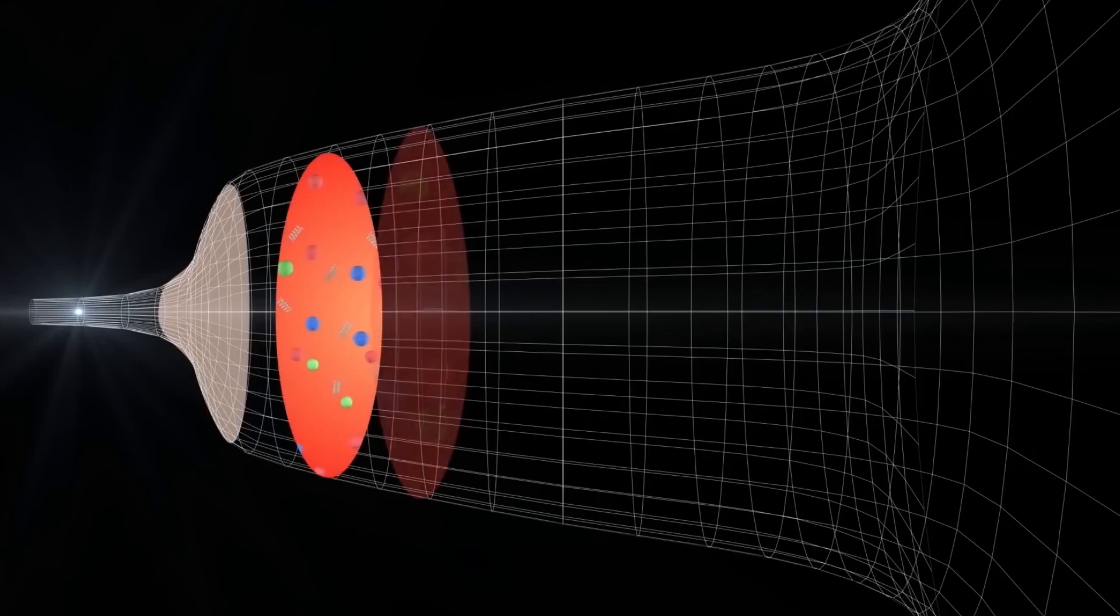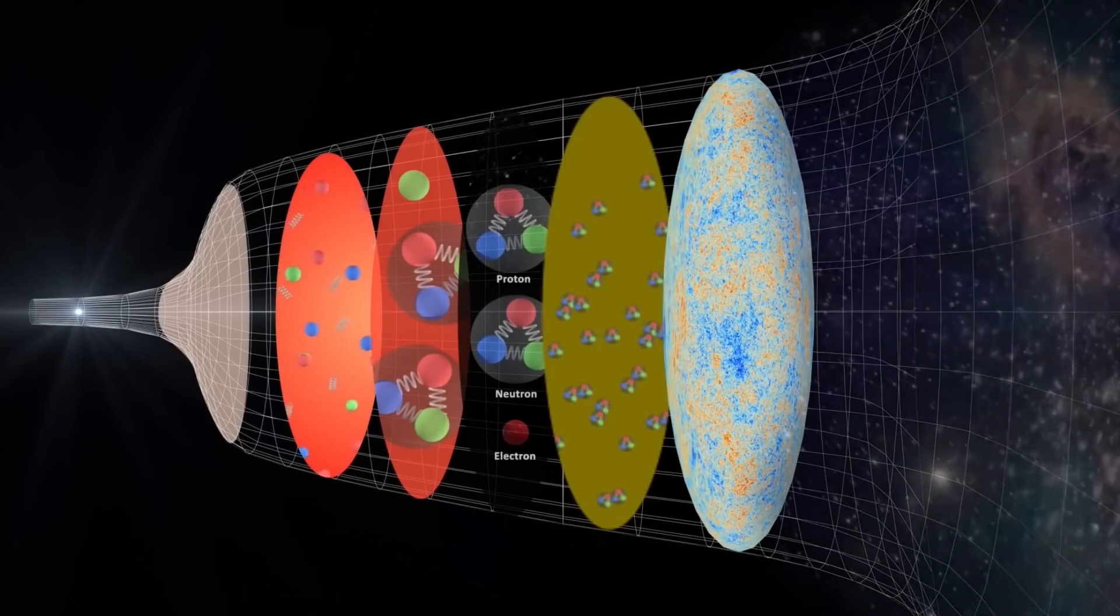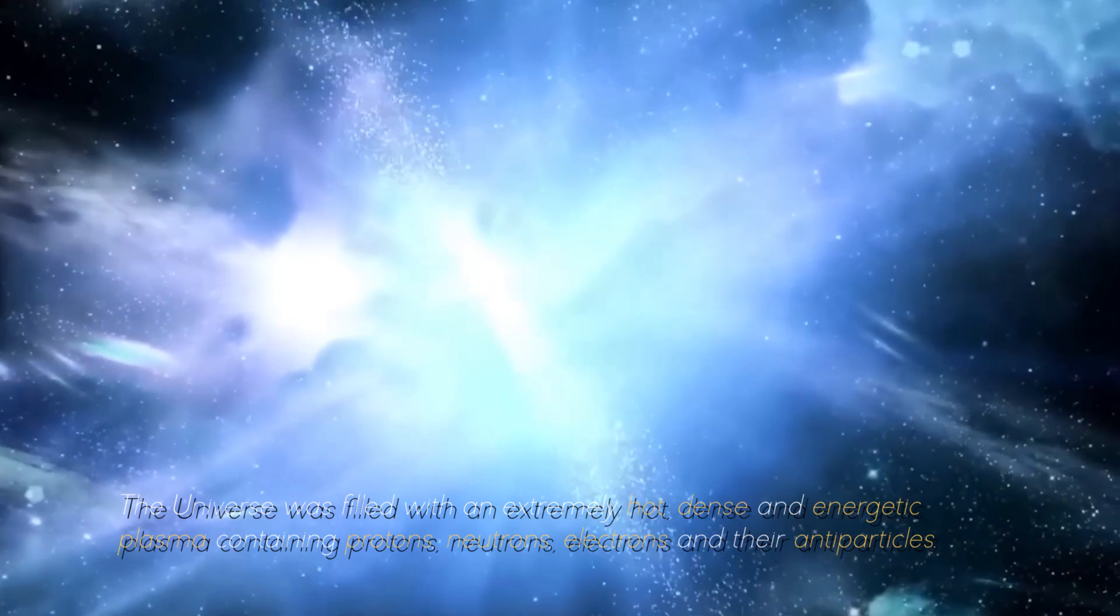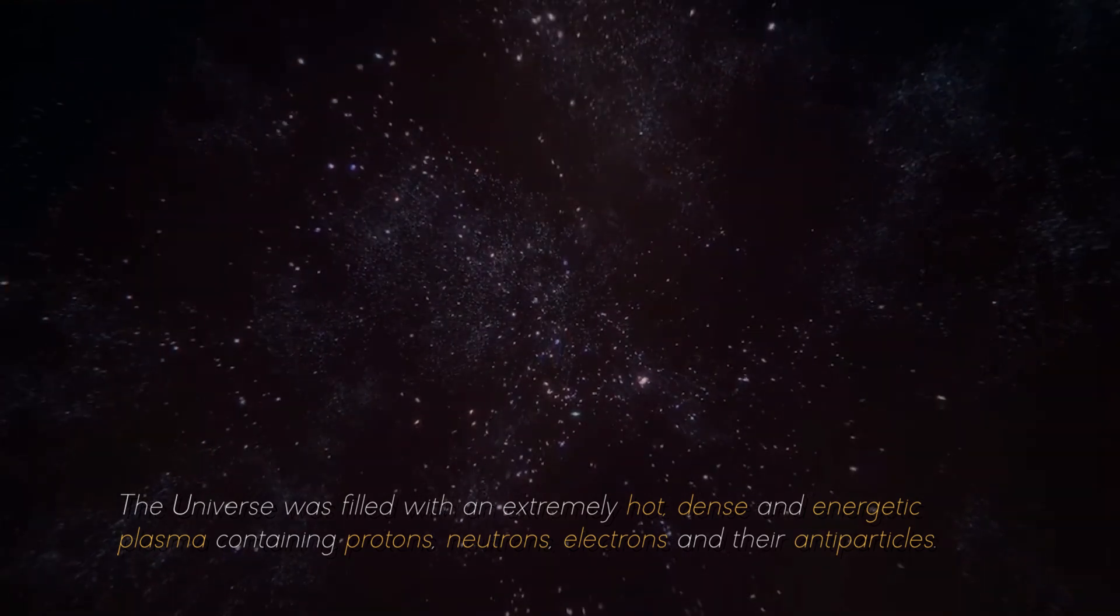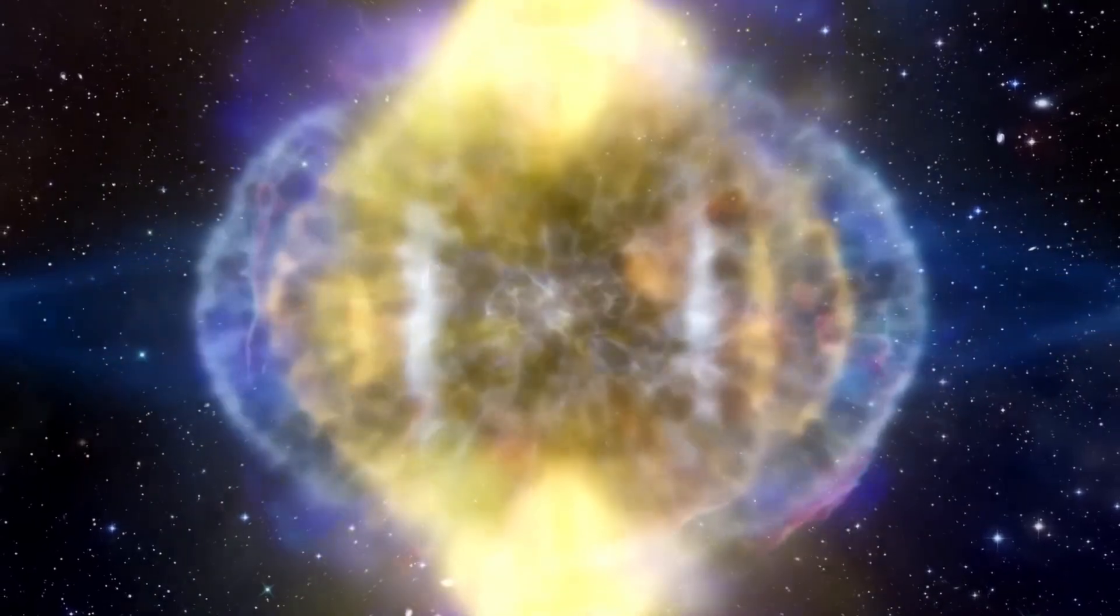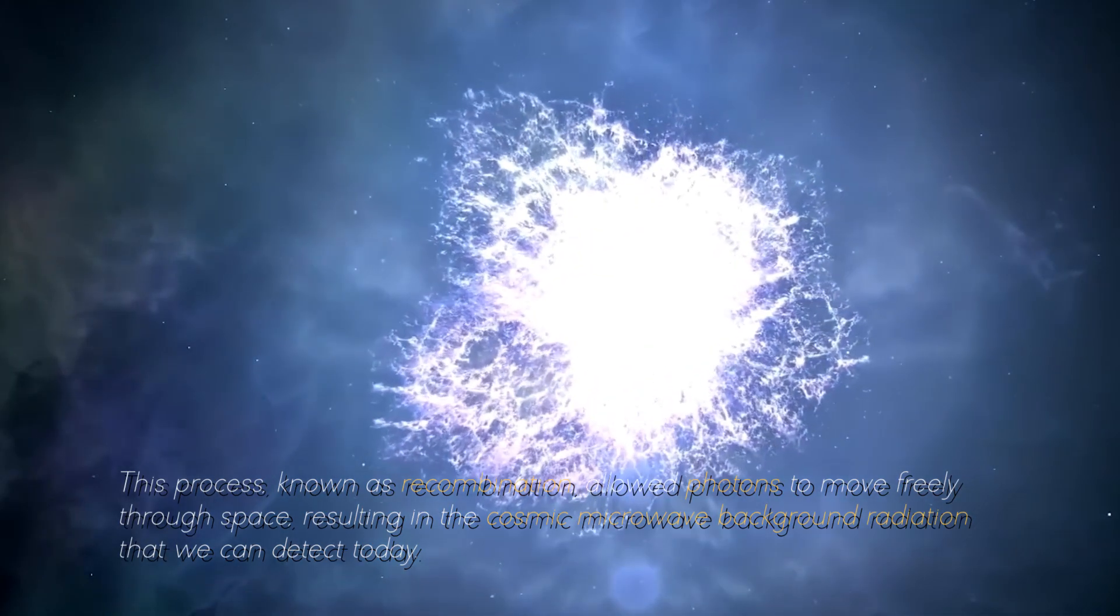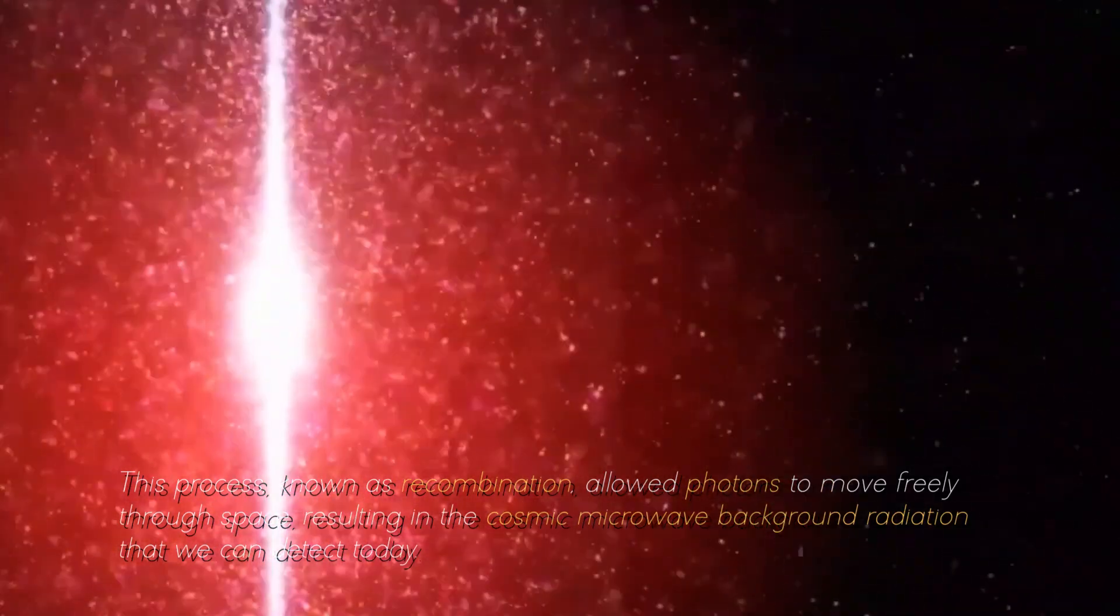During the first few seconds following the Big Bang, the singularity experienced a massive release of energy. The universe was filled with extremely hot, dense, and energetic plasma containing protons, neutrons, electrons, and their antiparticles. As the universe cooled due to its expansion, the temperature dropped enough to allow electrons to bond with protons and form neutral atoms. This process, known as recombination, allowed photons to move freely through space, resulting in the cosmic microwave background radiation that we can detect today.